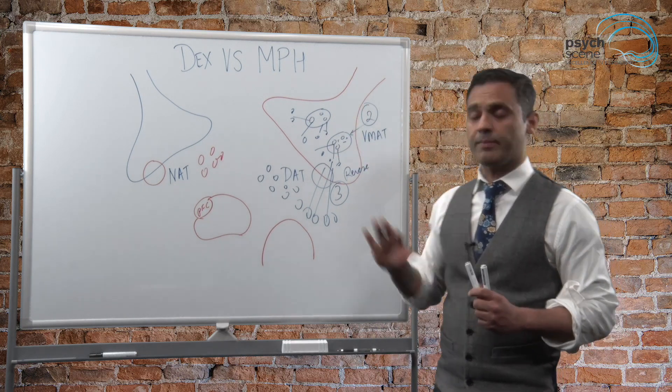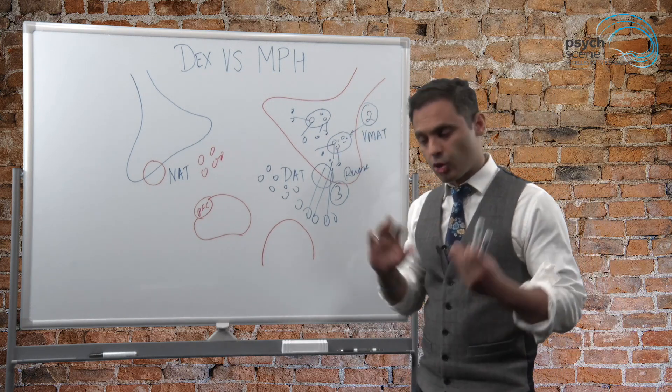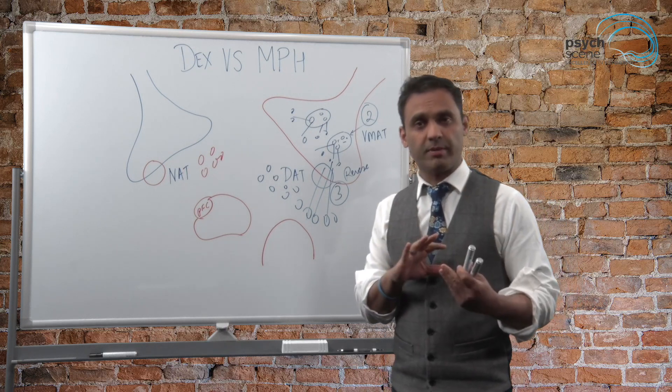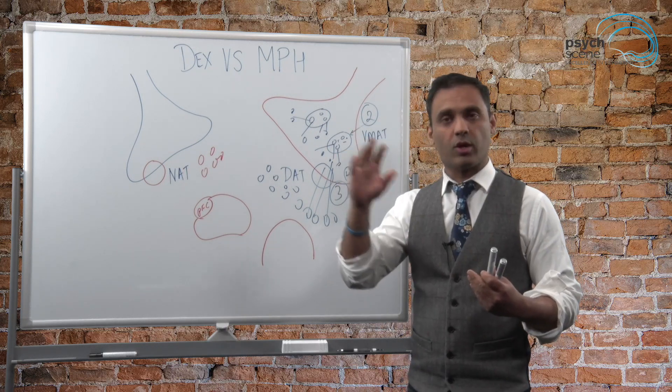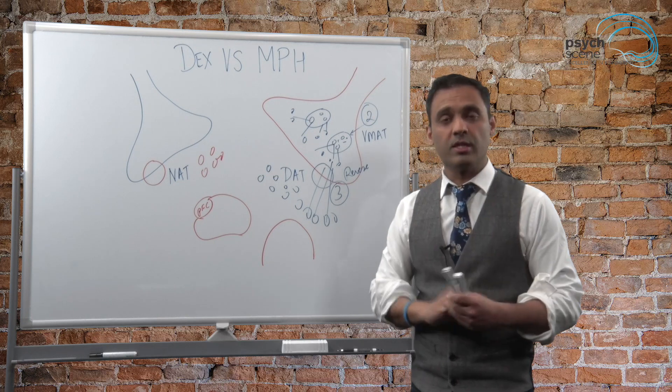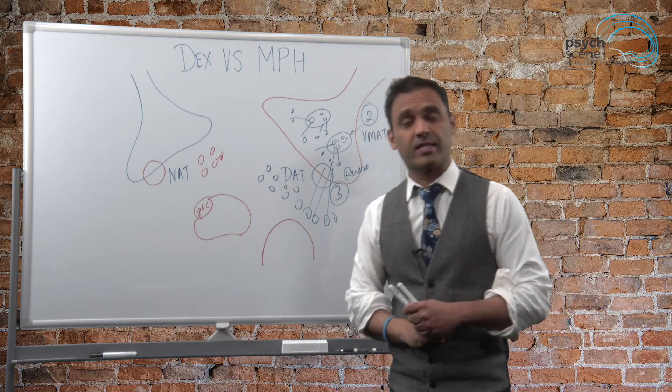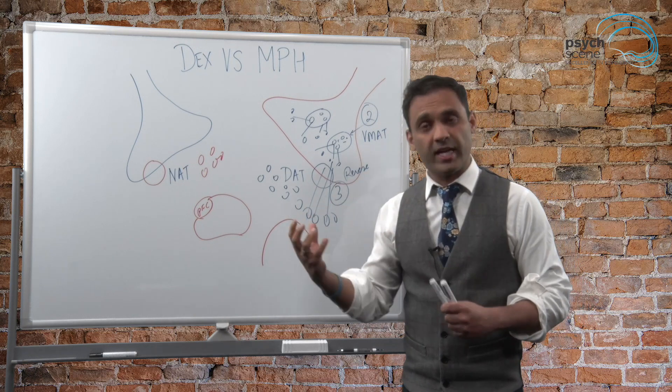Now, of course, when we think about dexamphetamine, we have the short dexamphetamine, again, onset very quick and lasts maybe three to four hours. But there is the longer acting version, such as lisdexamphetamine, which is known as Vyvanse.